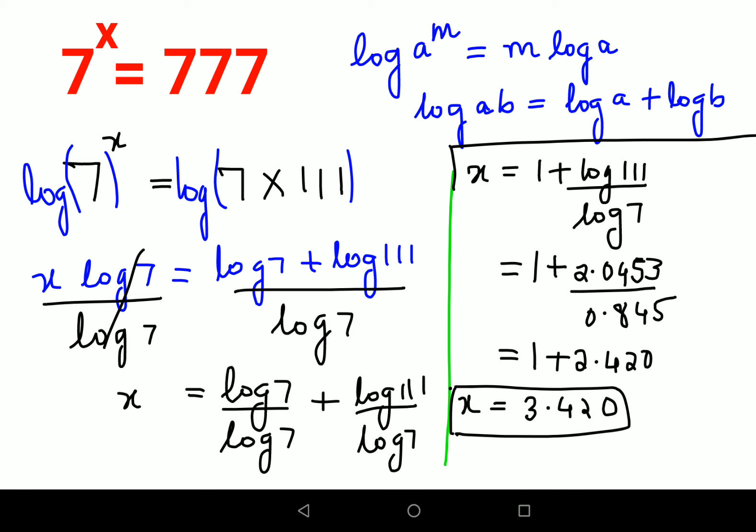Now coming to the point where I said that you can actually do this orally. Now how do we do this? See your question was 7 raised to x is equal to 777, and if they had given you options let's say A, B, C and D. One option was let's say 2 point something something, 3 point something something, 4 point something something and 5 point something something. Now in this case, because we are doing an entrance exam, you don't have the time to sit and calculate. So you do this directly.